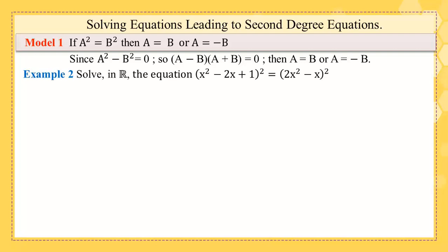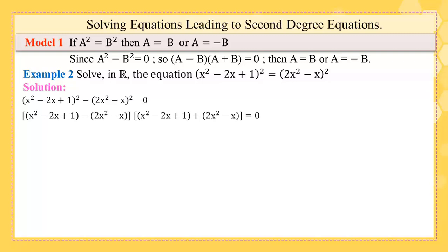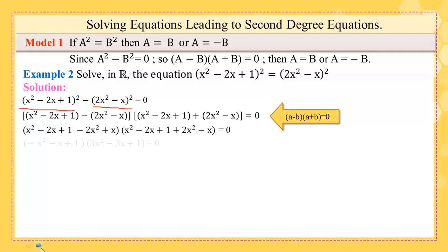Let us see this example: solve in ℝ the equation (x² - 2x + 1)² = (x² - x)². Moving everything to one side, you can factorize it into two factors equal to zero. After reducing and calculating, you get: -x² - x + 1 = 0 or 3x² - 3x + 1 = 0.